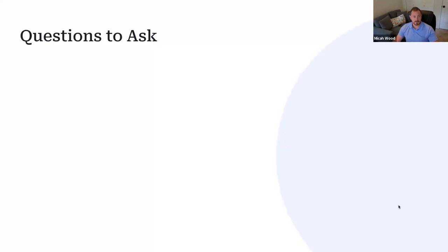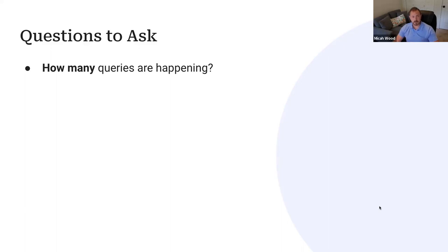What are the types of things to look out for when optimizing or doing maintenance on your database? The first thing to ask is: how many queries are happening? On average, you might see WordPress make anywhere from 40 to 60 or even 100 queries on a page — that's not out of the ordinary. But I've seen sites making 400 or 600 queries. Ideally, you want to reduce the number of queries as much as possible.